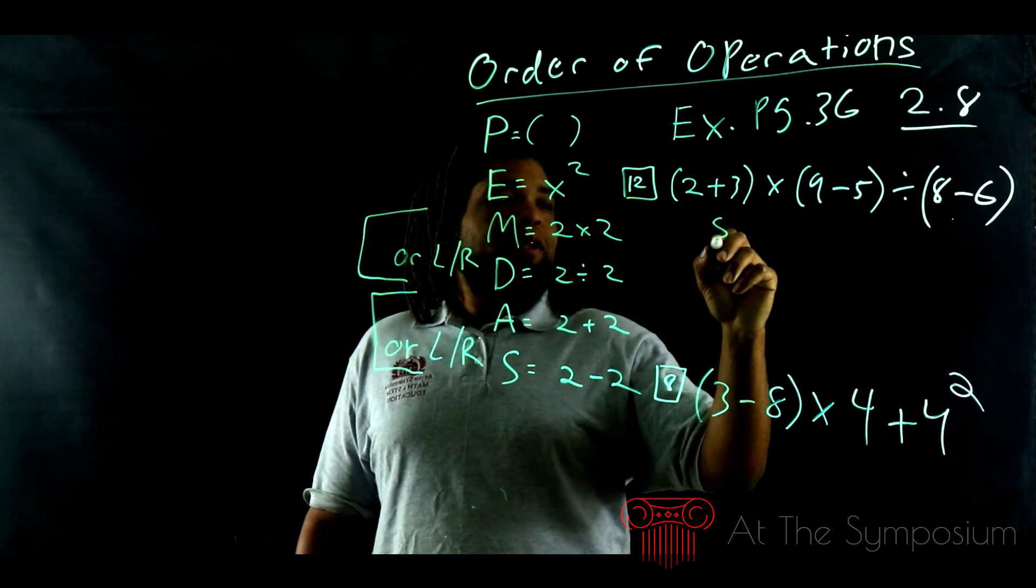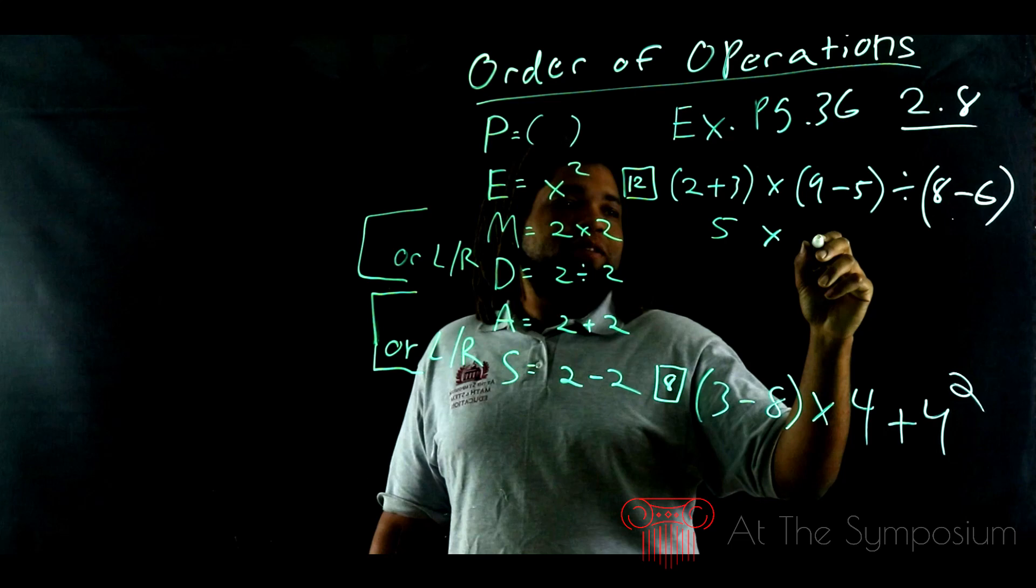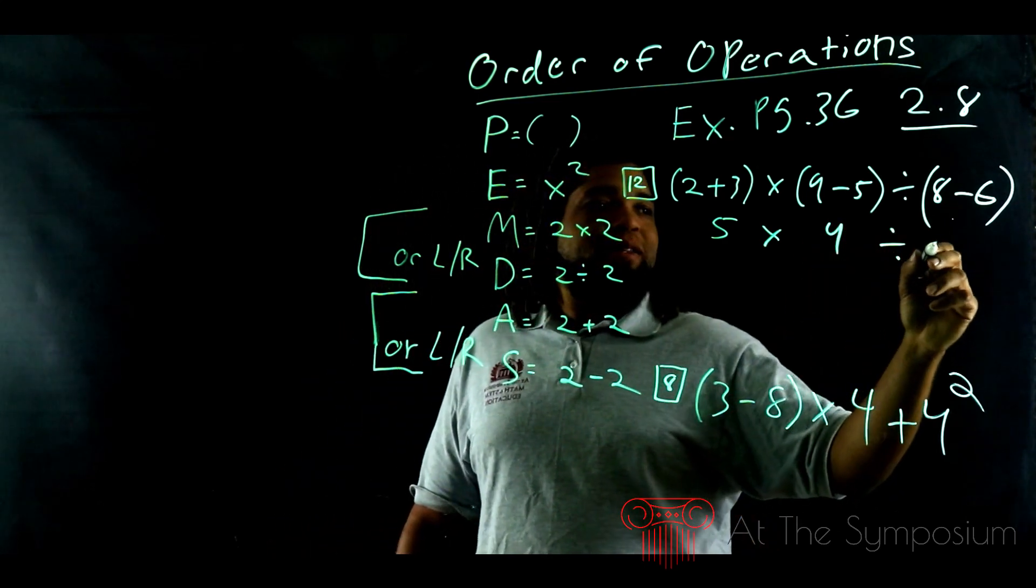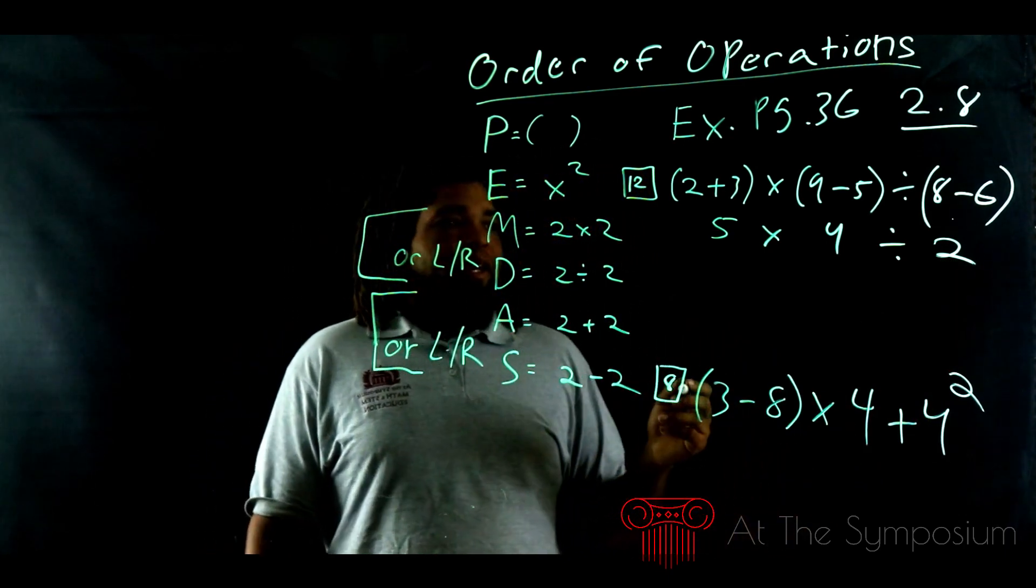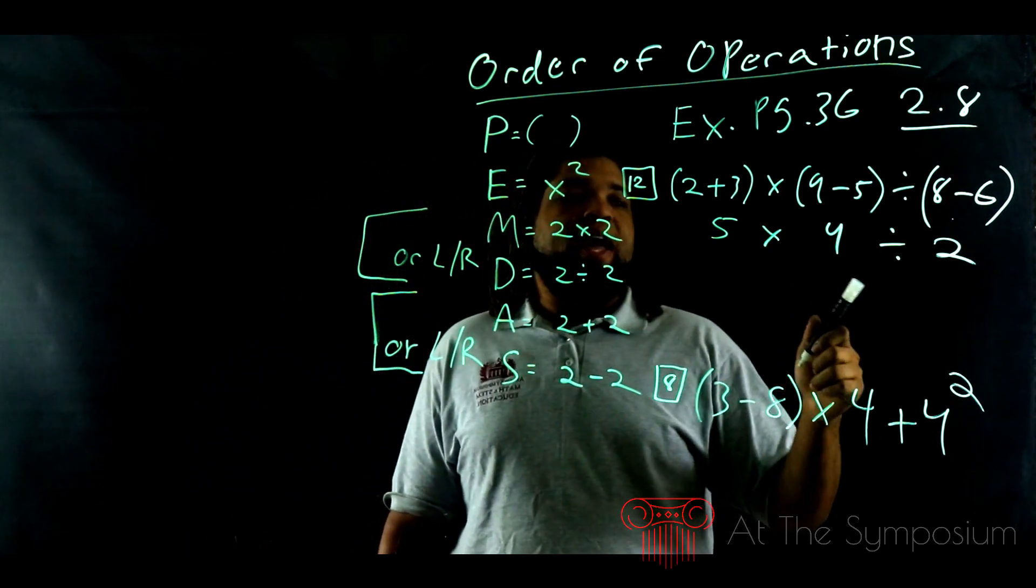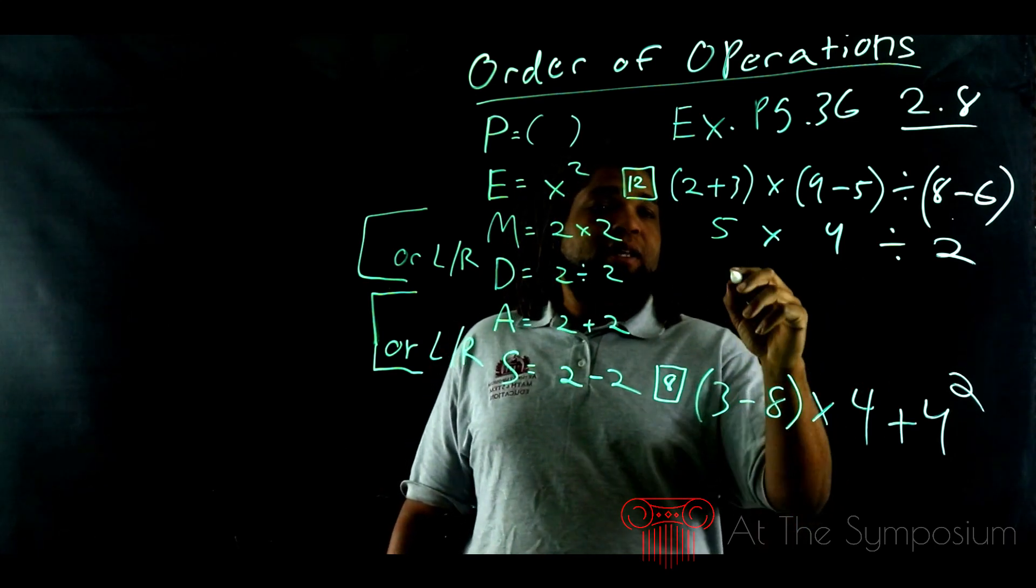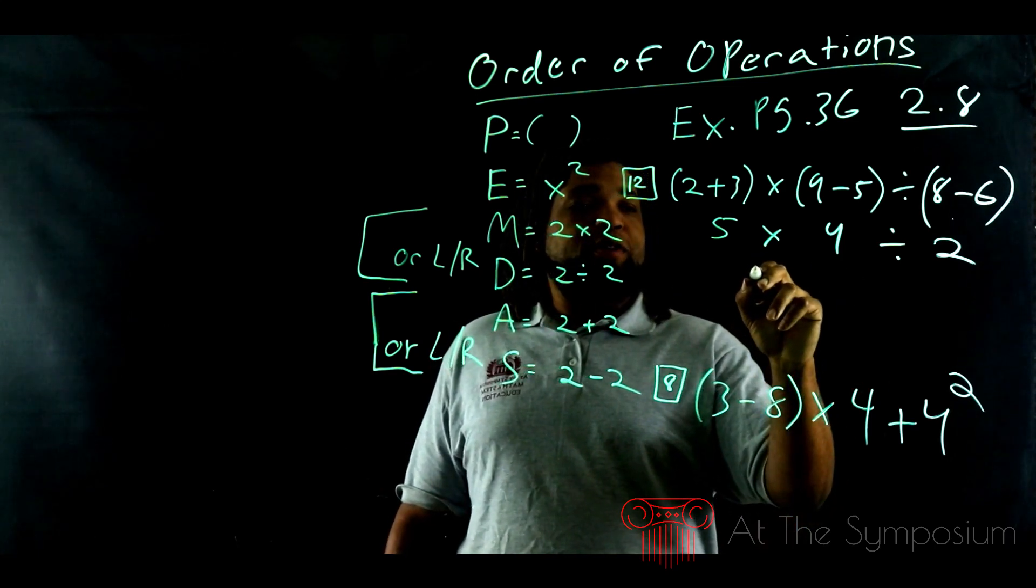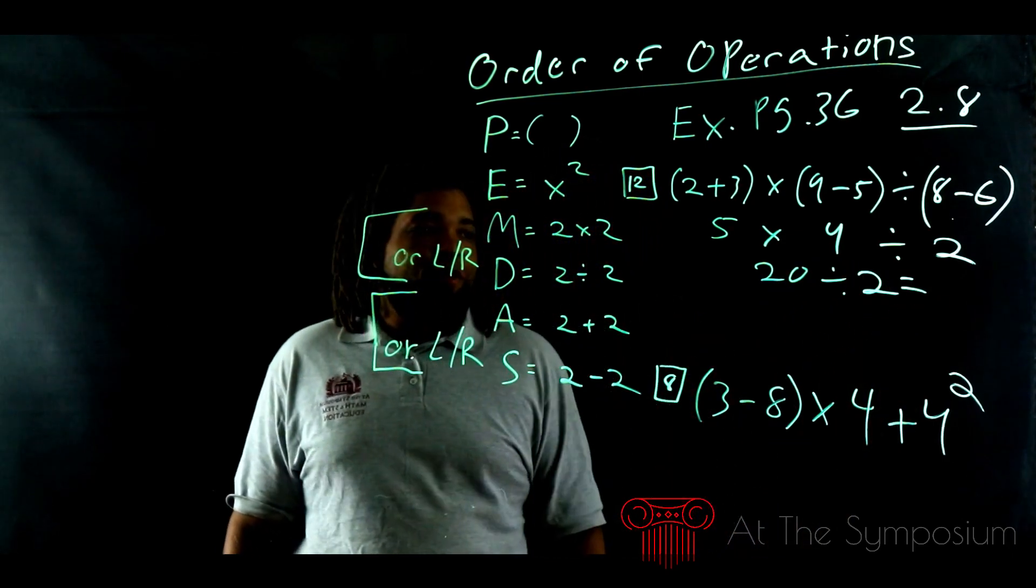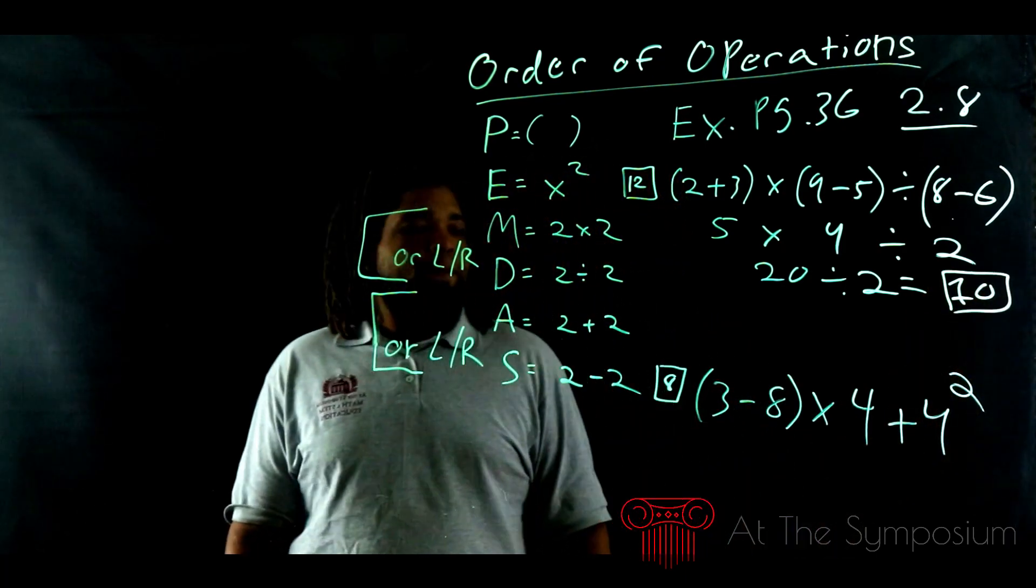So 2 plus 3 is 5. That's times 9 minus 5. 9 minus 5 is going to give us 4. Then it's divided by 8 minus 6. 8 minus 6 is going to give us 2. But now we have to figure out which one do we do first, multiplication or division. We multiply or divide from left to right. So multiplication actually comes first in the series if we go from left to right. So that's going to give us 5 times 4, which is 20, divided by 2. And now we're just left with division. 20 divided by 2 is going to give us 10. And that's our answer.